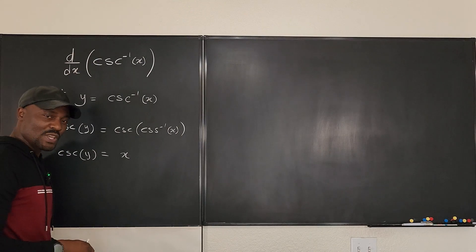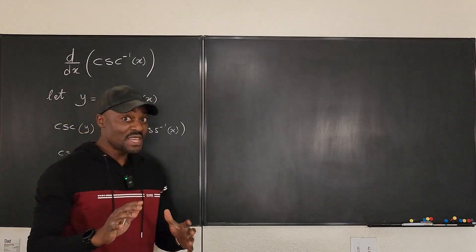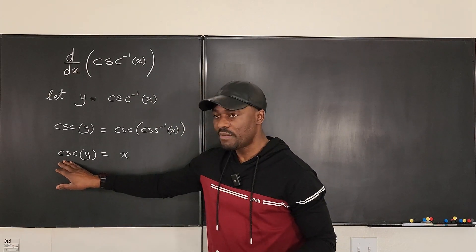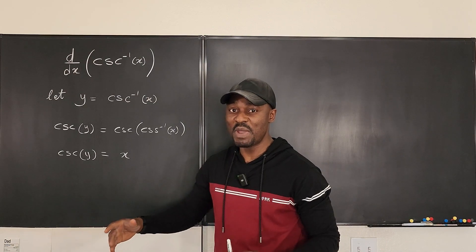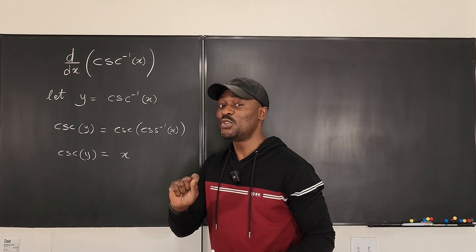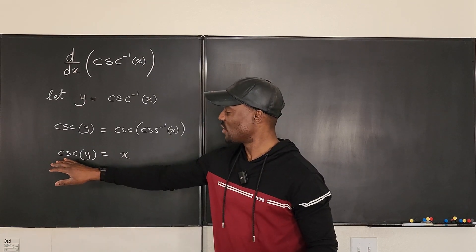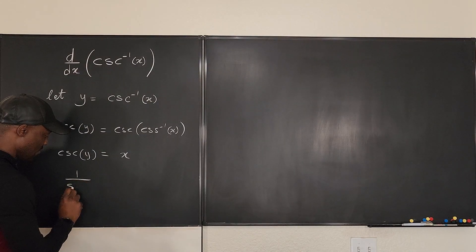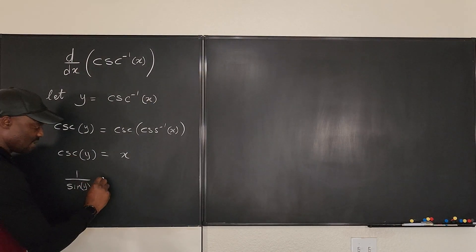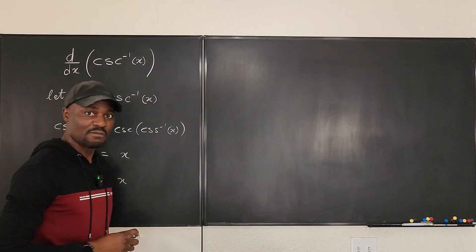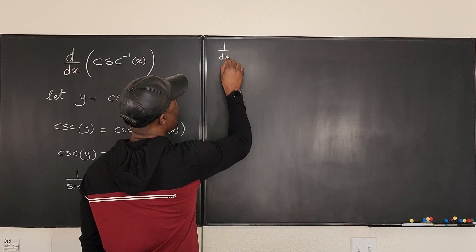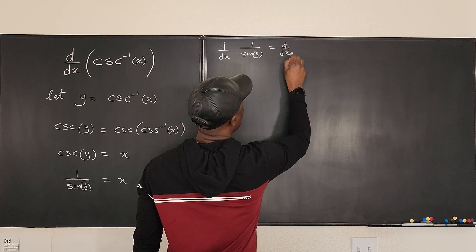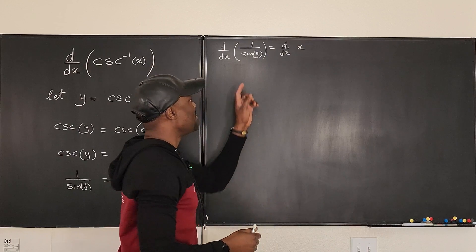You can rewrite cosecant y as 1 over sine y. I'd recommend using the quotient rule. So rewrite cosecant y as 1 over sine y, giving us 1 over sine y equals x. Then take the derivative of both sides: d/dx of (1 over sine y) equals d/dx of x.